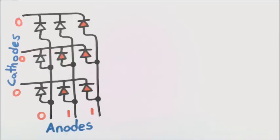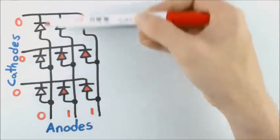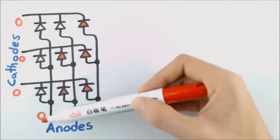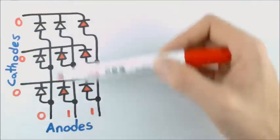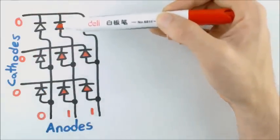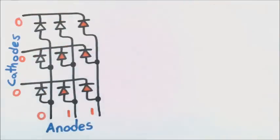But if we do it at something like one hundredth or a thousandth of a second — that we flash this column, and then flash the next column — then it will happen so fast that our eyes won't even notice.